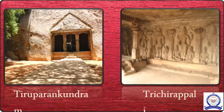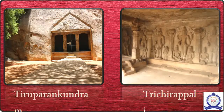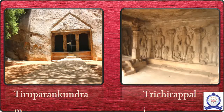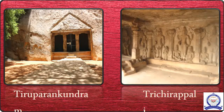In the Shiva temple of Pandyas, the linga is carved out of the mother rock. The figure of Nandi is also carved out of the rock. The Shiva lingam in the sanctum is installed in the center with enough space all around it. The sanctum also has a drainage canal. The pillars are divided into three parts and are of different sizes.